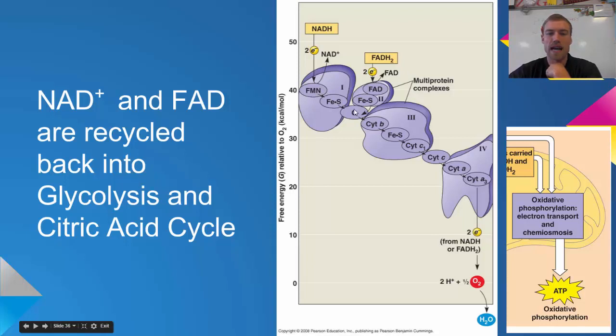The electrons are going to be passed down the chain as they're being passed from one protein to another with levels of increasing electronegativity. Eventually oxygen is going to be here at the end, it's going to accept those electrons and add a couple of hydrogens to form water, which is one of our byproducts of cellular respiration.